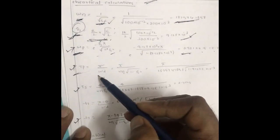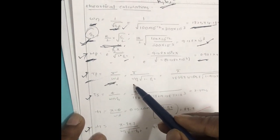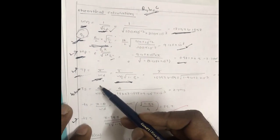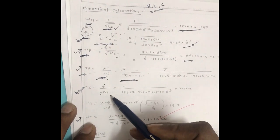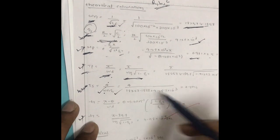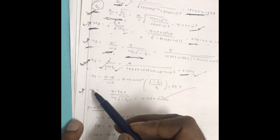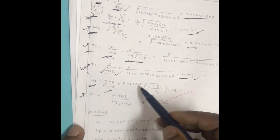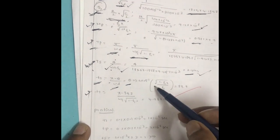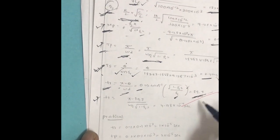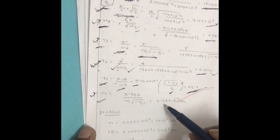Similarly, the formula for settling time is 4/(ωn × ζ). Substituting ωn and ζ gives 2.3 milliseconds. For rise time, the formula is (π − θ)/ωd, where θ = tan⁻¹(√(1−ζ²) / ζ). Substituting the known ζ value gives θ, and then substituting in the rise time formula gives 4.9 × 10⁻⁴ seconds.